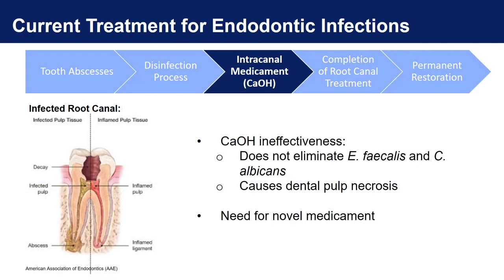Calcium hydroxide is ineffective against persistent bacteria, ephacallus, and the fungus, candida albicans, which may cause severe health repercussions if left untreated. The high pH of calcium hydroxide also causes dental pulp necrosis, which delays tissue healing.